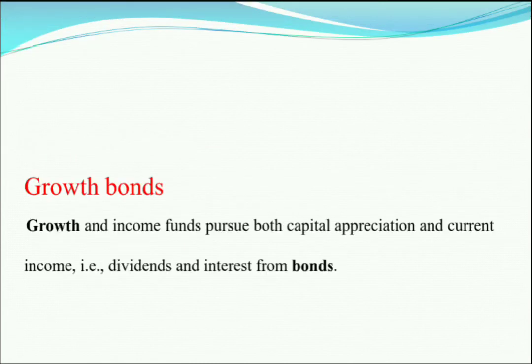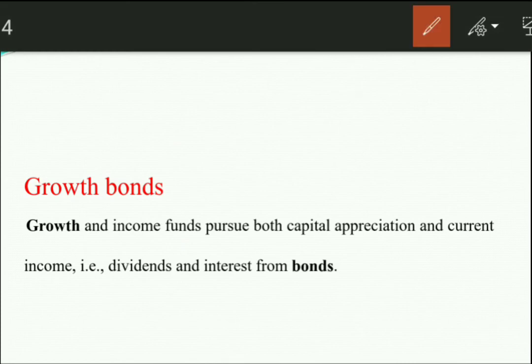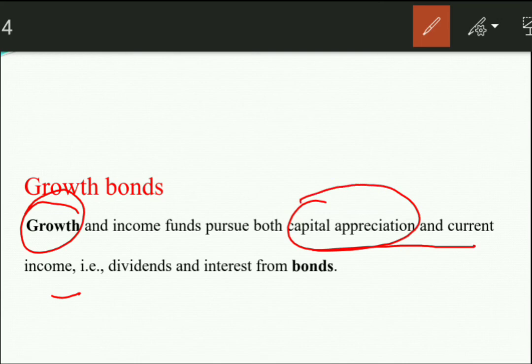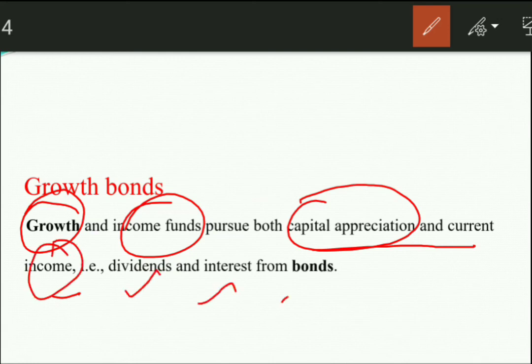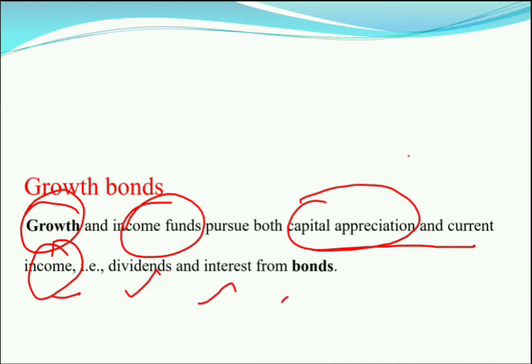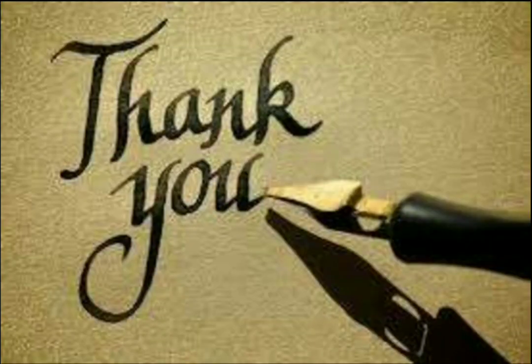The last instrument is the Growth Bond. When investors want capital appreciation rather than regular income, the maturity period is long. Growth and income funds pursue both capital appreciation and current income. So it depends on the investor's awareness and taste — where he or she wants to invest. Thank you, I hope you liked the video. Please share, like, and subscribe to the channel to get all notifications on time.